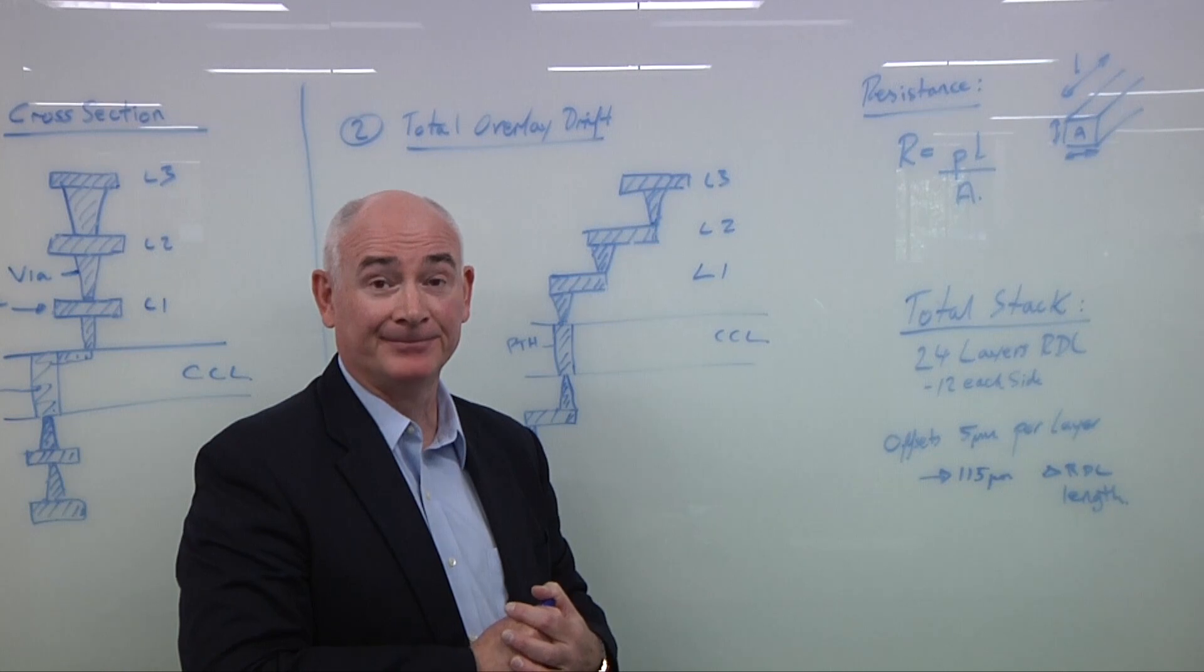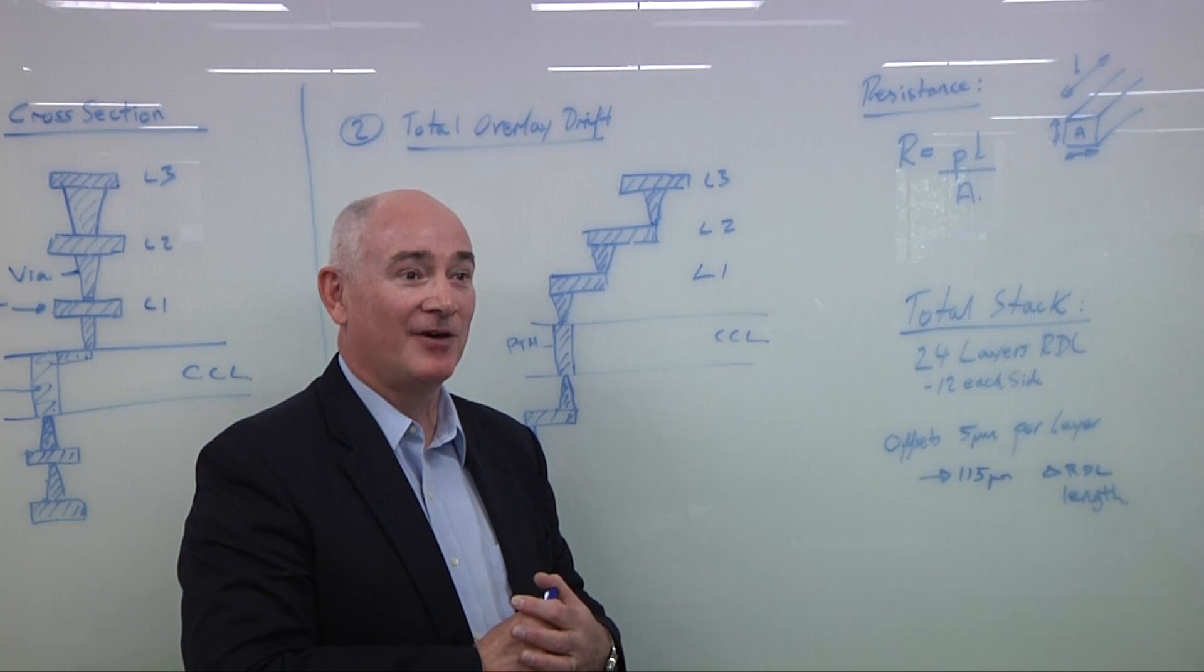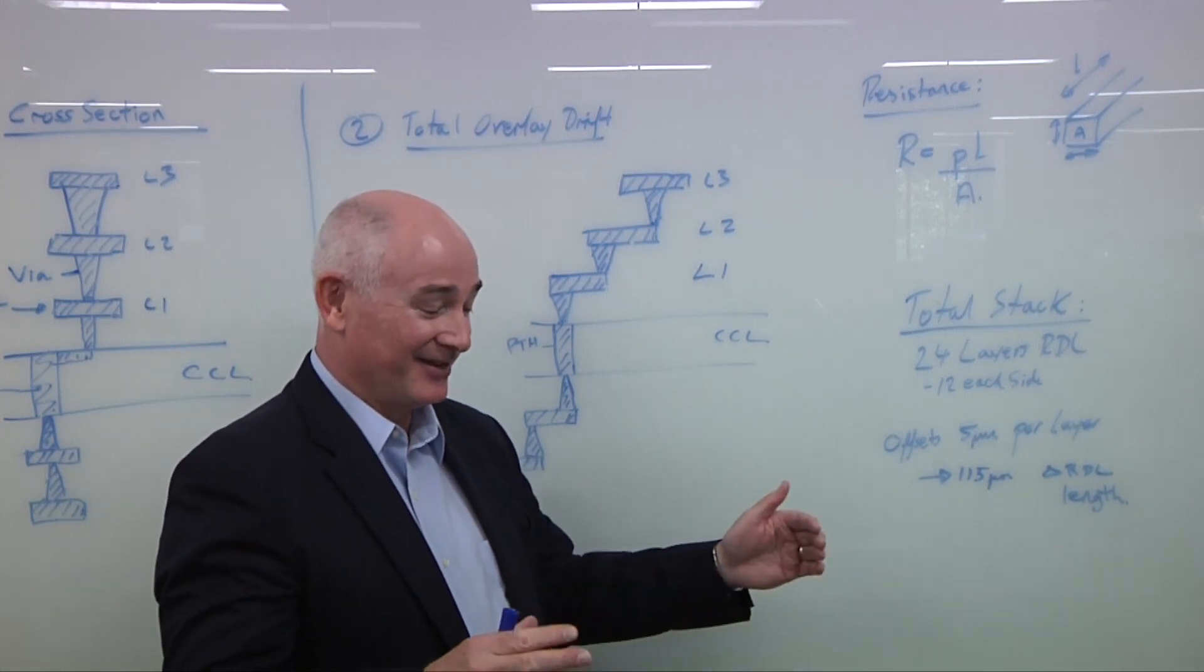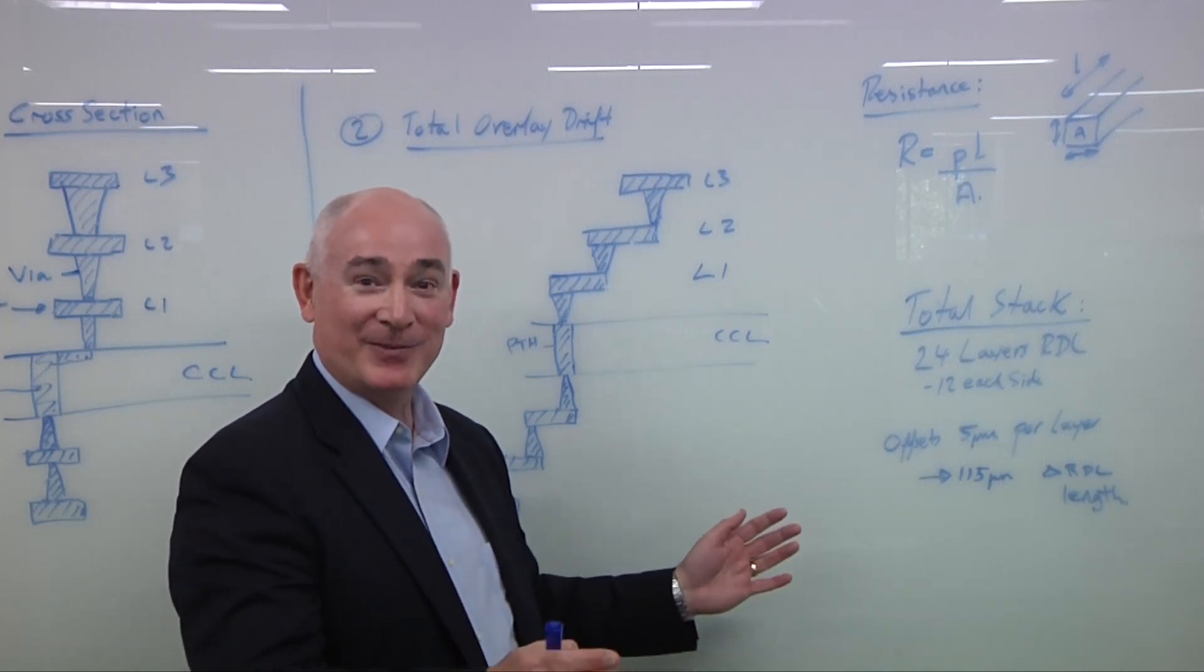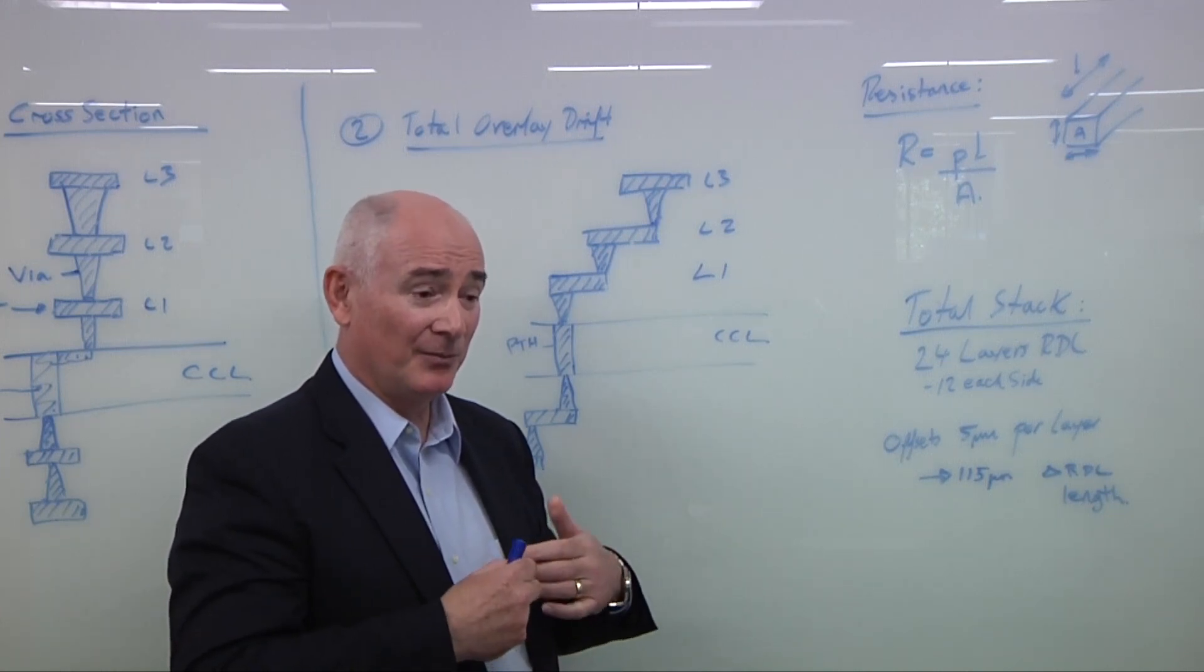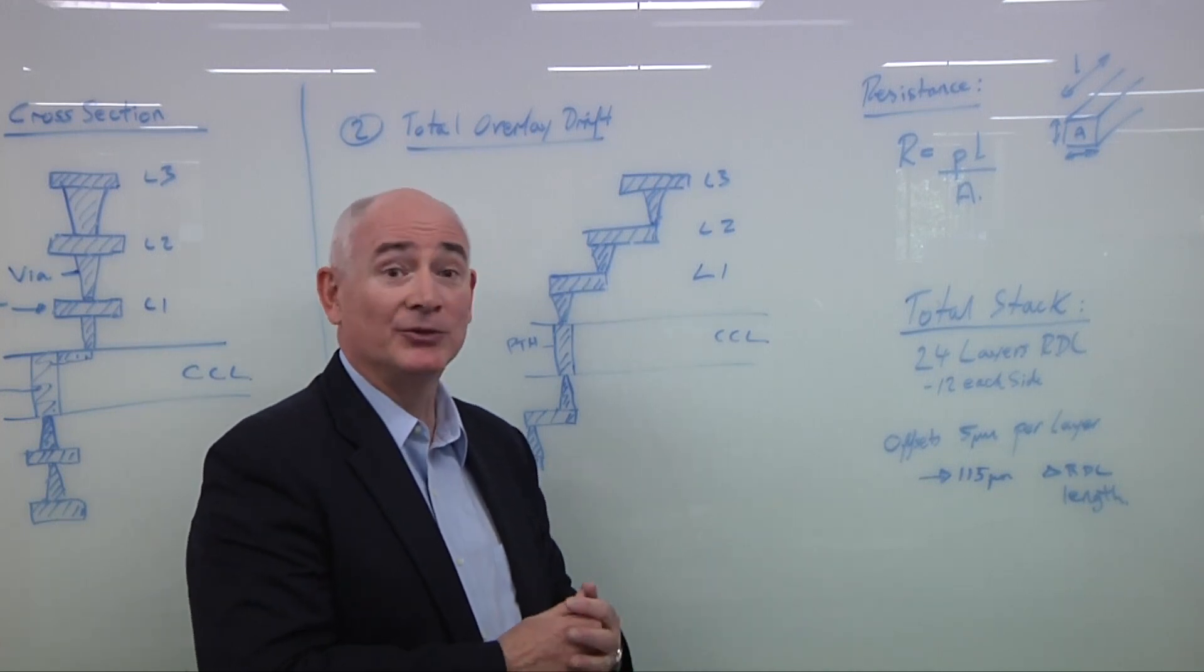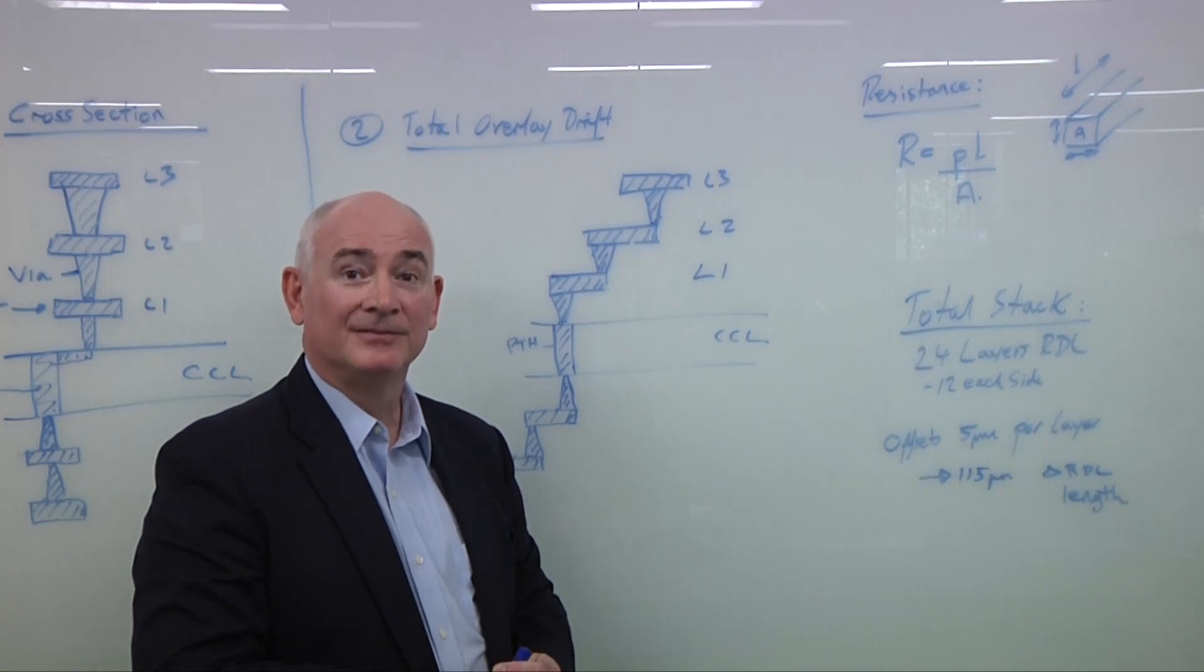As you add more RDL layers, do the thermal problems increase? Yes. In fact, what you find is that when you get to like layer 20, that the rectangle panel, which was 510 by 515, is now some sort of trapezoid shape. So it's completely different. And of course, it's very important to be able to predict what's going to happen so you can accommodate that dimensional change. How does all this impact what you're trying to achieve in the chip?